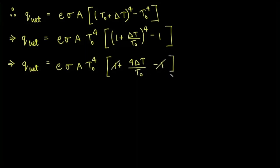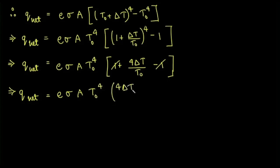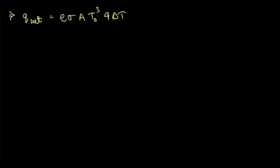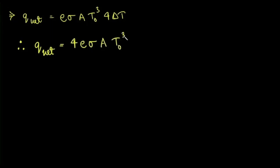The 1s cancel, so Q_net equals e·σ·A·T₀⁴ times 4·ΔT/T₀. The T₀⁴ and T₀ simplify to T₀³, giving Q_net equals 4·e·σ·A·T₀³·ΔT. Opening ΔT as T minus T₀, Q_net equals 4·e·σ·A·T₀³·(T - T₀).